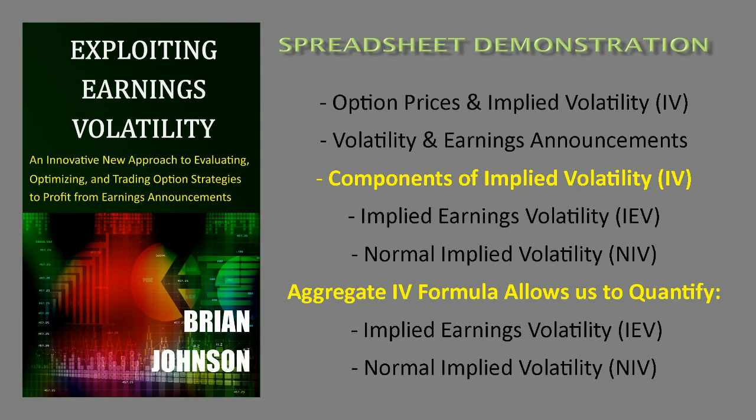There are two distinct components of implied volatility. The first is implied earnings volatility, which is the level of volatility associated with the one-day earnings announcement itself. The other days that occur prior to the expiration of the option constitute normal implied volatility, or essentially non-earnings volatility.